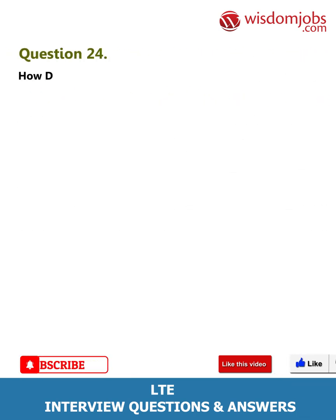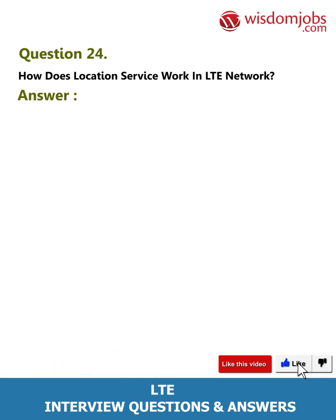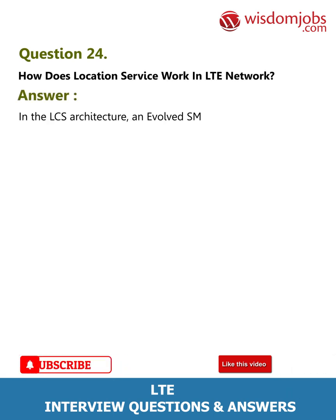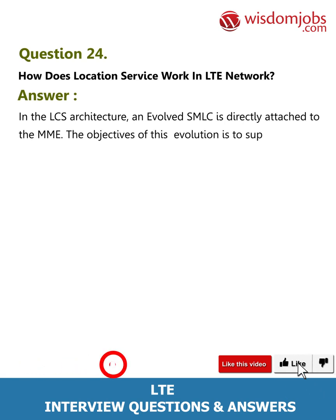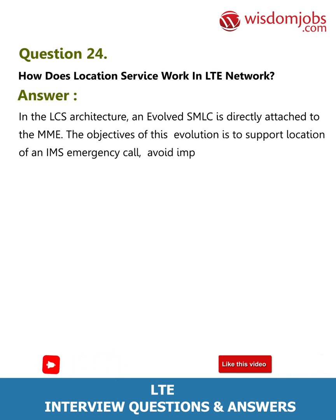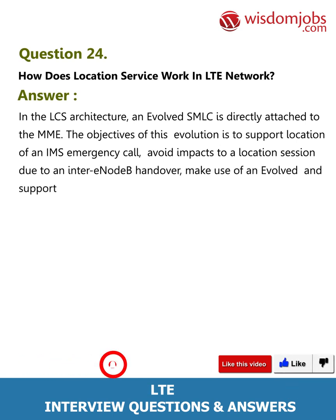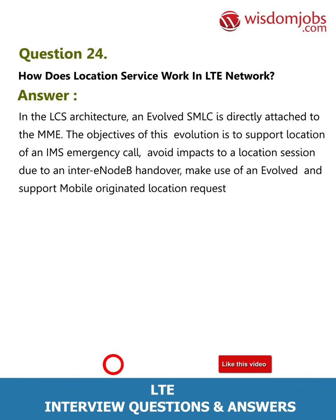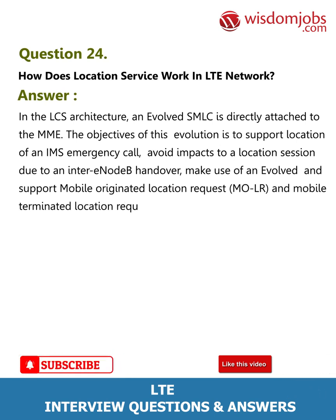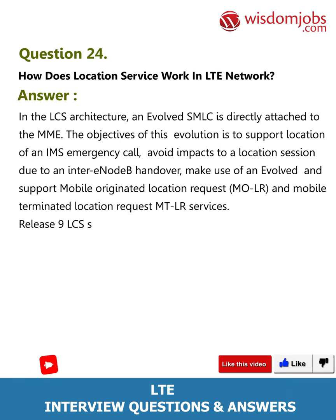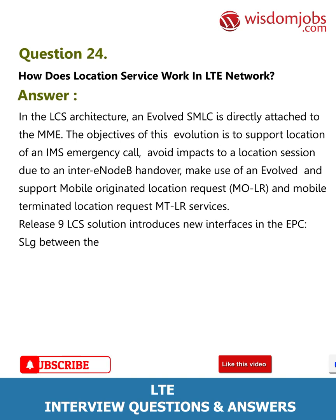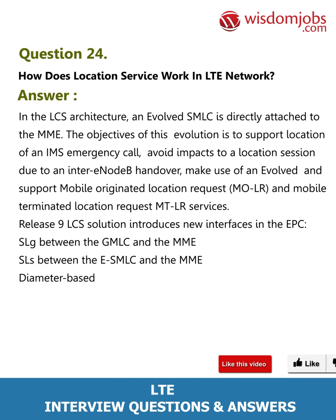Question 24: How does location service work in an LTE network? Answer: In the LCS architecture, an evolved SMLC is directly attached to the MME. The objectives of this evolution are to support location of an IMS emergency call, avoid impacts to a location session due to an inter-eNodeB handover, and support Mobile Originated Location Request (MOLR) and Mobile Terminated Location Request (MTLR) services. Release 9 LTE CS solution introduces new interfaces: SLg between the GMLC and the MME, SLs between the eSMLC and the MME, and diameter-based SLh.